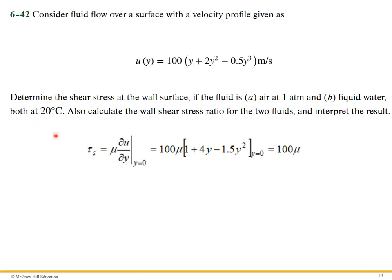We want to calculate the wall shear stress ratio for the two fluids. We have the formula for wall shear stress: tau_w equals mu times partial u partial y, evaluated at y equals zero.